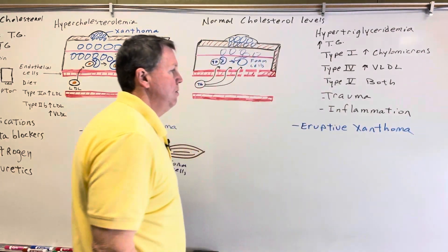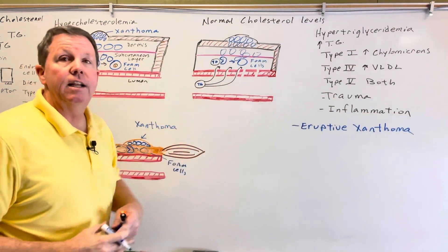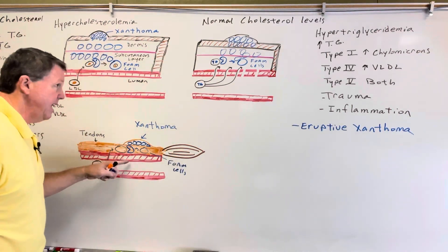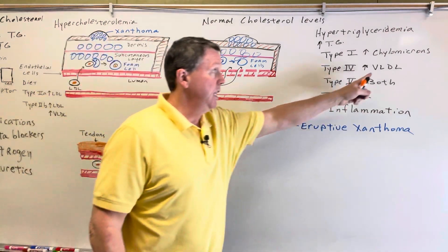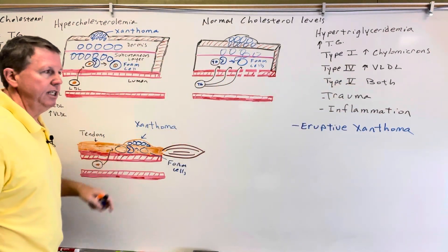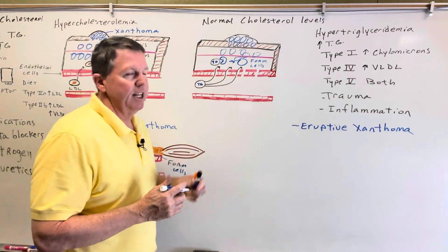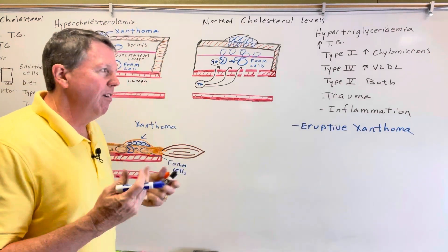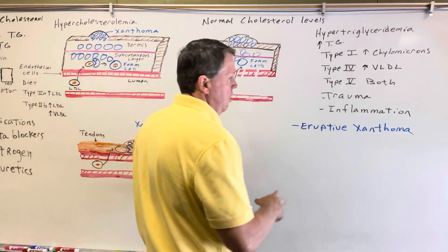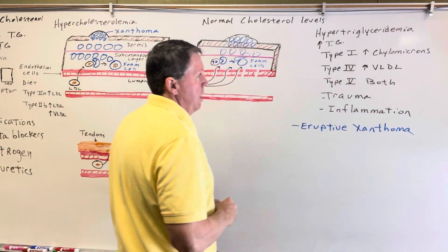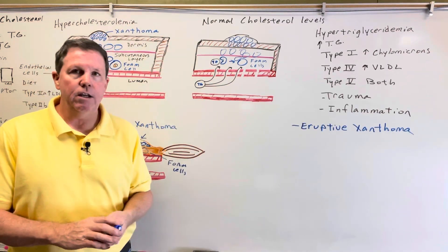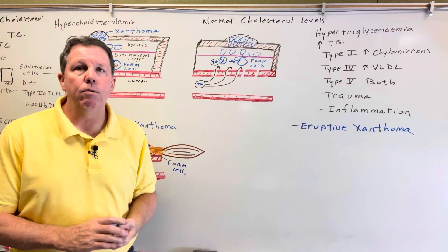Eruptive xanthomas occur quickly and if we control our diet they'll go away quickly. We can also get them with an increase in VLDL. Normally these are going to be on the extensor surfaces of the body, or areas that undergo a lot of trauma — the buttocks can get these too. So that's eruptive xanthomas and that's it for xanthomas. Thank you so much for watching — if you enjoyed the video please hit the like and subscribe button.